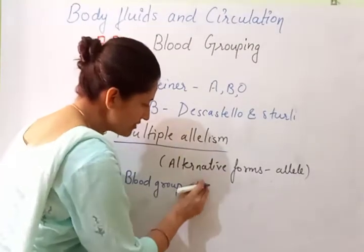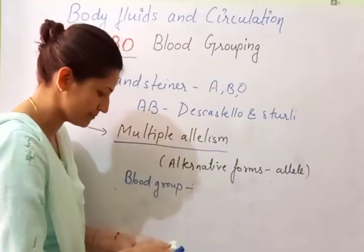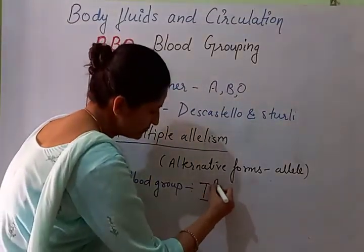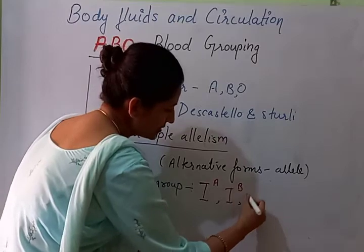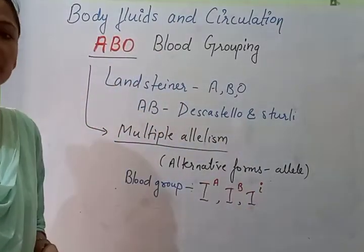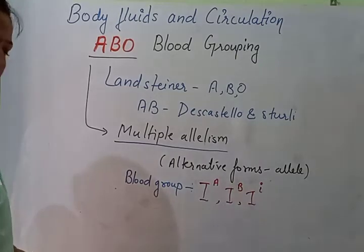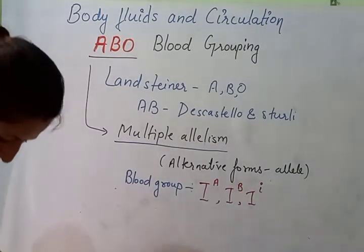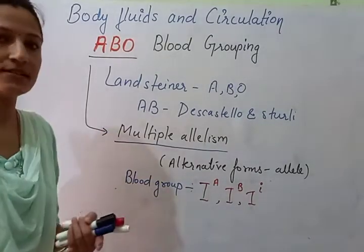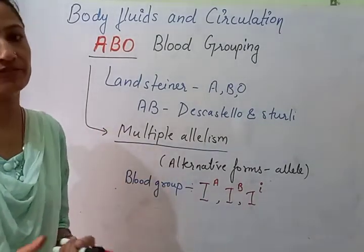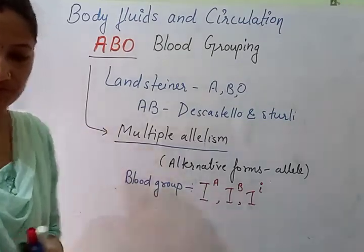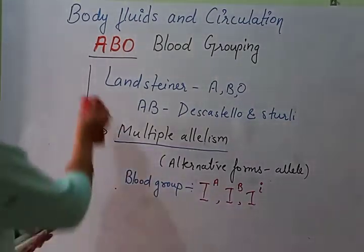The alleles which are responsible for this are I-A, I-B, and i. These are the three alleles. Now we will talk about the possibilities of the genotypes and the phenotypes for various types of blood groups.